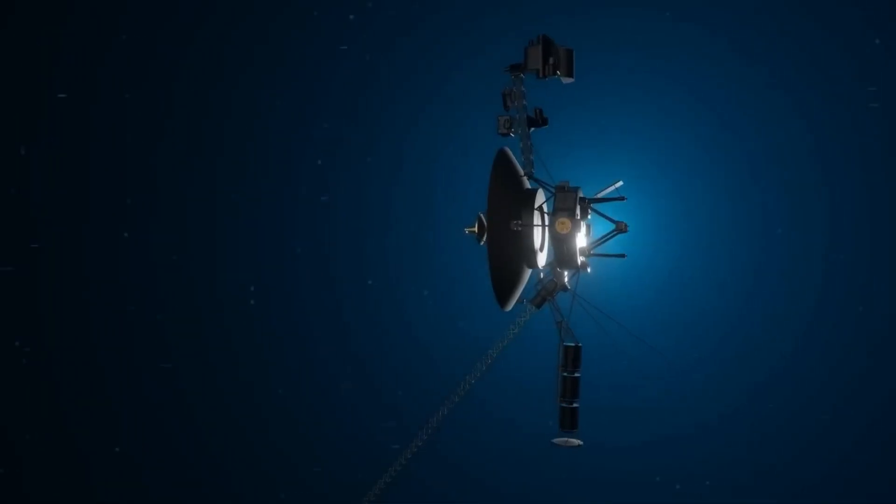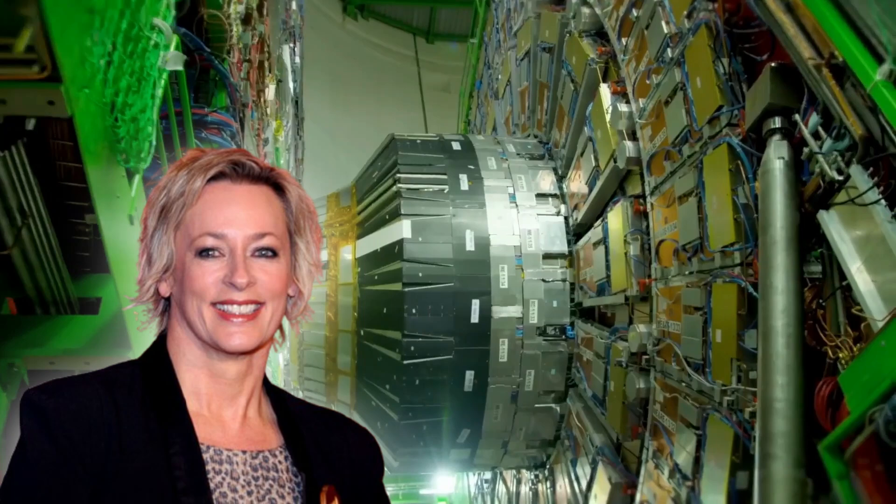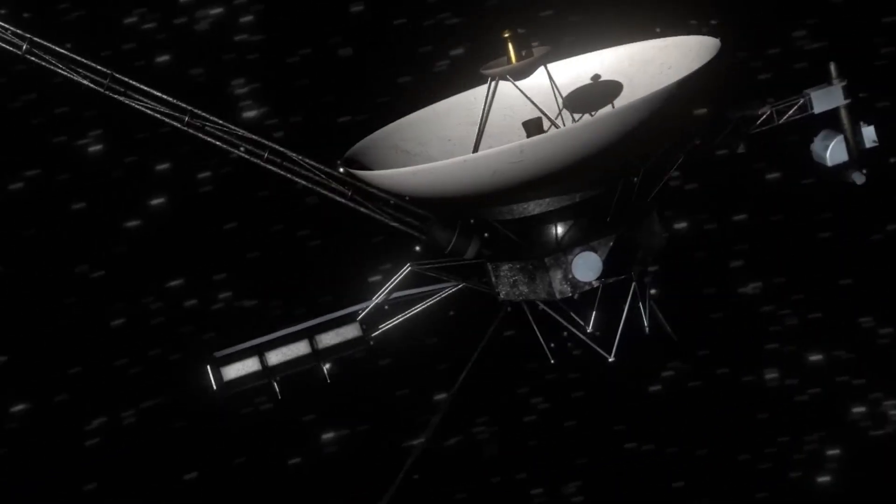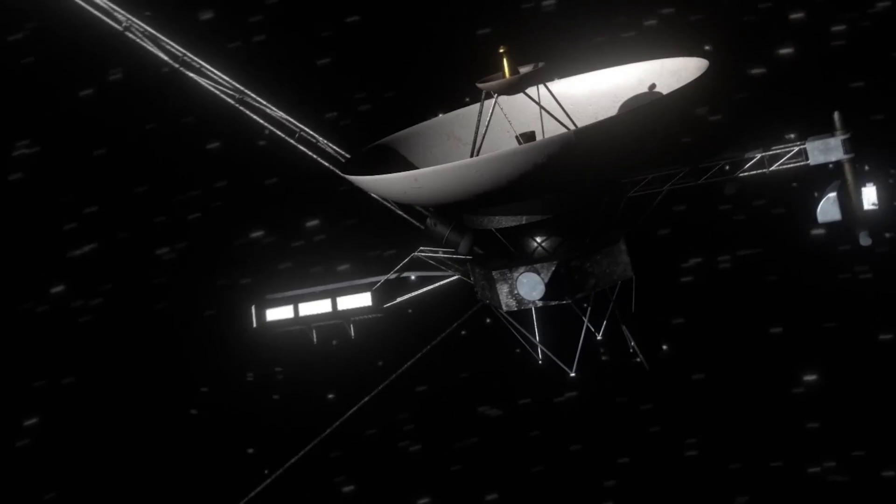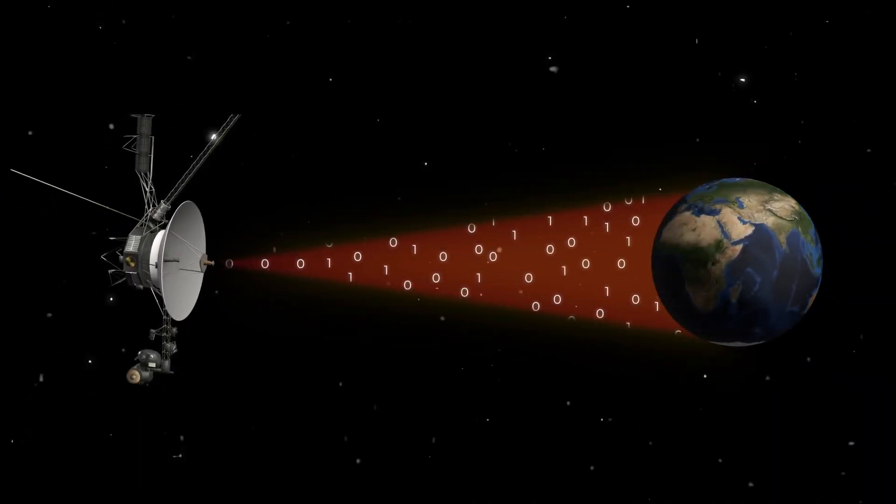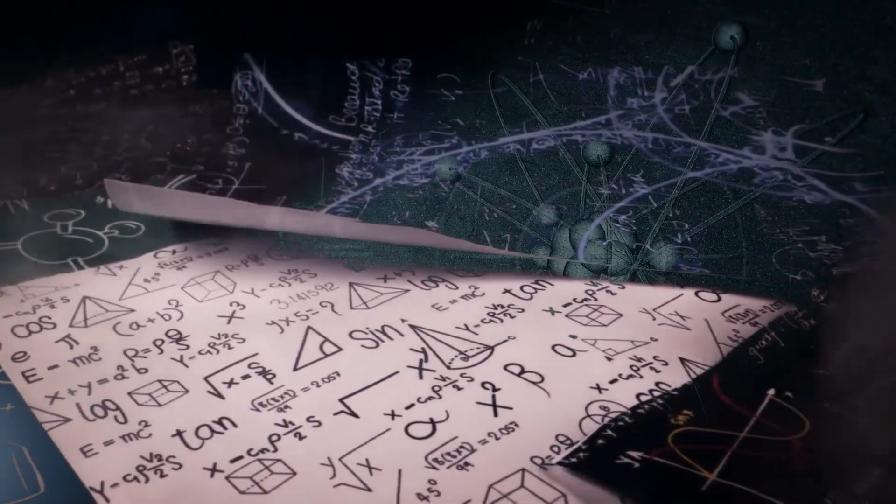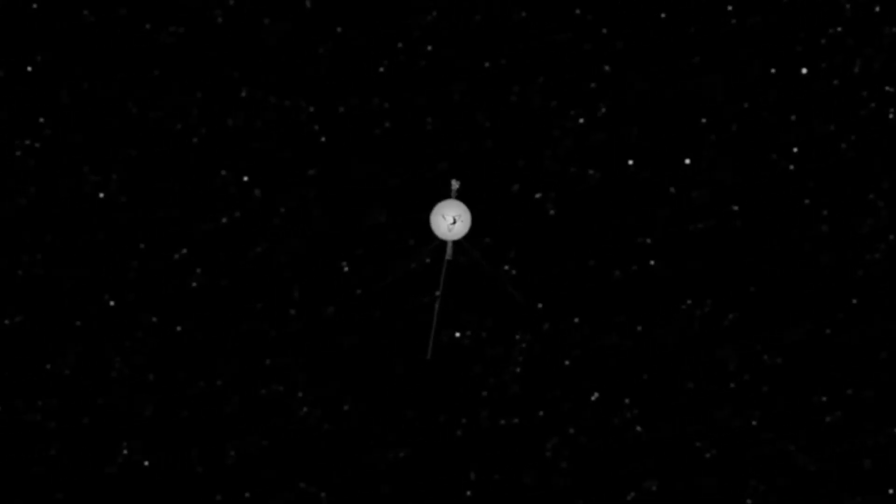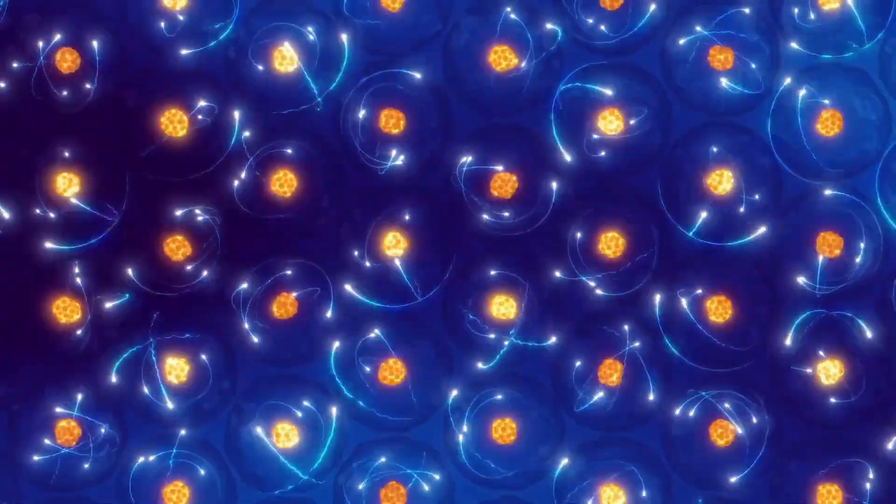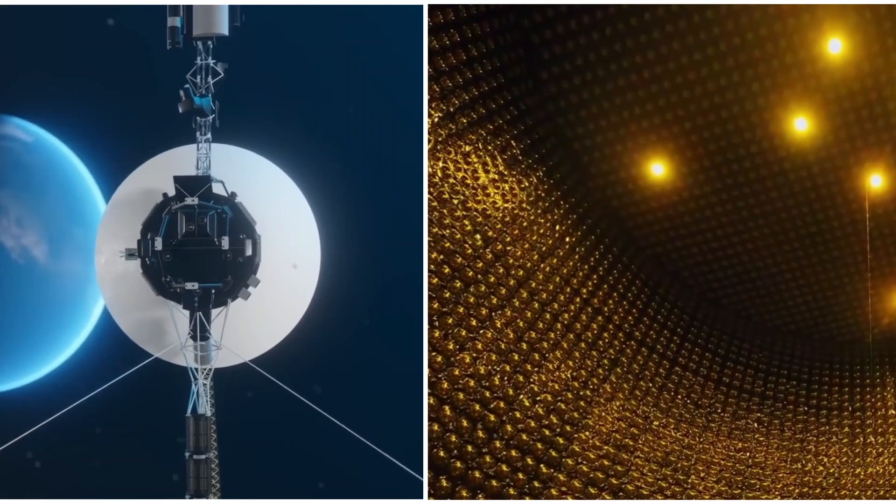Dr. Amanda Keller, a leading physicist at CERN, was among the first to review the data. Her reaction was one of cautious astonishment. "If this signal is genuine, it means Voyager 1 has somehow interacted with neutrinos in a way that our current models of physics cannot explain. It would force us to reconsider everything we know about particle interactions in deep space."